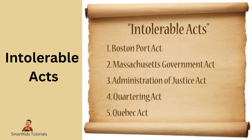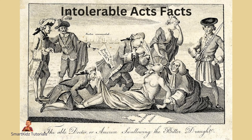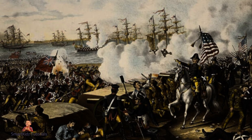These laws closed Boston Harbor, suspended Massachusetts Charter, and quartered British soldiers in private homes. These actions by the British government outraged the colonists, who believed that their rights and freedoms were being violated. Tensions escalated, and in 1775, armed conflict broke out between the British and colonial forces at Lexington and Concord, marking the beginning of the American War of Independence. In summary, the British policy of taxation without representation and their attempts to assert greater control over the colonies led to growing discontent and resistance, which in turn led to the outbreak of the American War of Independence.